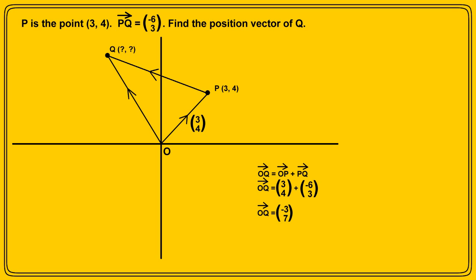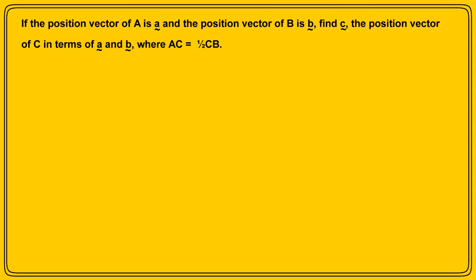Now that's quite straightforward. Wasn't too difficult, was it? So let's look at a rather more tricky example. If the position vector of point A is small a, and the position vector of point B is small b, find small c, the position vector of C in terms of A and B, where AC is one half of CB.